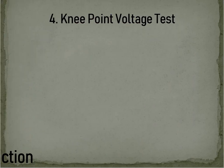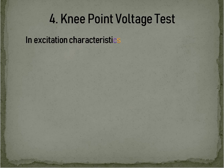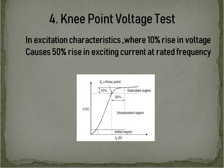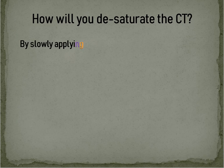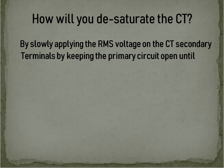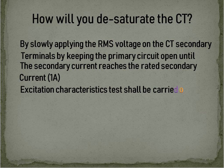Knee Point Voltage Test: In the excitation characteristics, the knee point is where a 10% rise in voltage causes a 50% rise in exciting current at rated frequency. To desaturate the CT, slowly apply RMS voltage on the CT secondary terminals with the primary circuit open, until the secondary current reaches the rated secondary current of 1A. The Excitation Characteristics Test shall be carried out only after desaturating the CT.